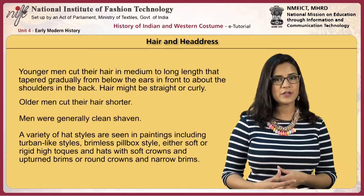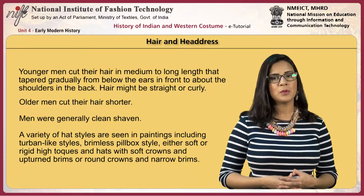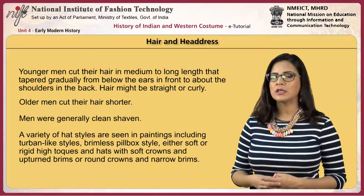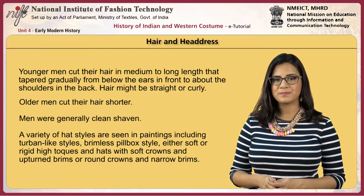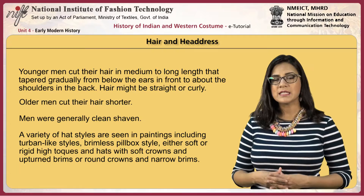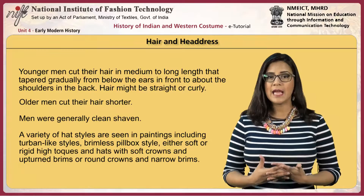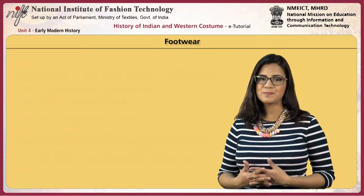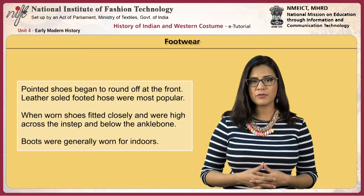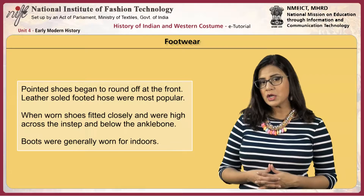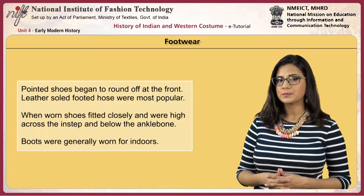Hair and headdress: younger men cut their hair in medium to long length that tapered gradually from below the ears in front to about the shoulders in the back. Hair might be straight or curly. Older men cut their hair shorter. Men were generally clean shaven. A variety of hat styles are seen in the paintings, including turban-like styles, brimless pillbox styles, either soft or rigid high torques, and hats with soft crowns and upturned brims or round crowns and narrow brims. For footwear, pointed shoes were worn, which began to round off at the front. Leather-soled footed hose were most popular. Shoes fitted closely and were high across the instep and below the ankle bone. Boots were generally worn for indoors.